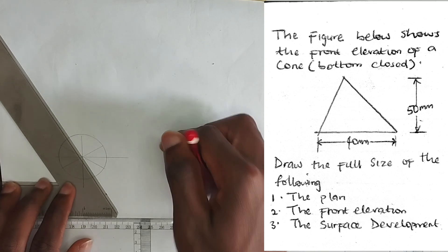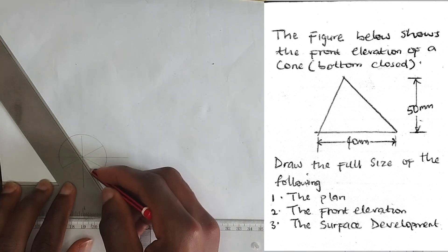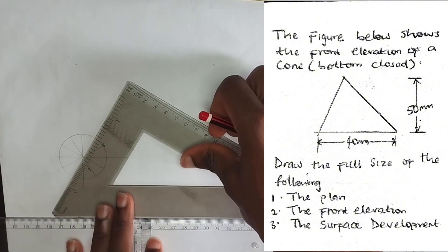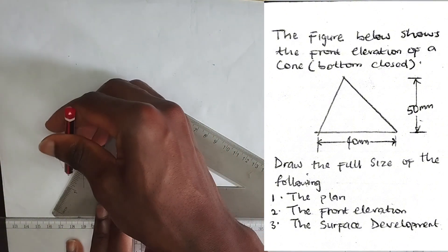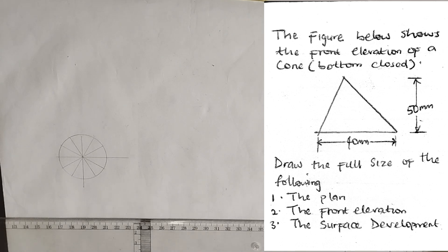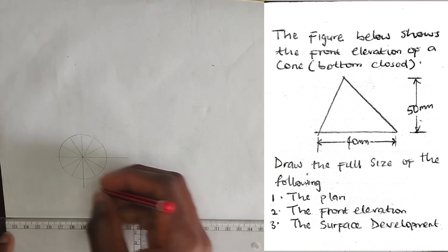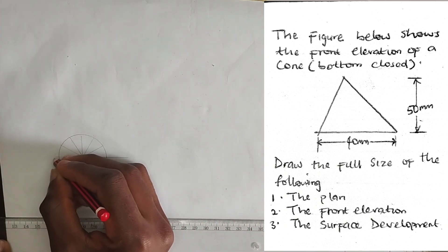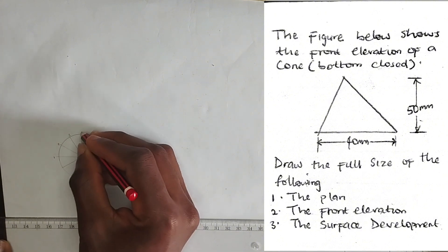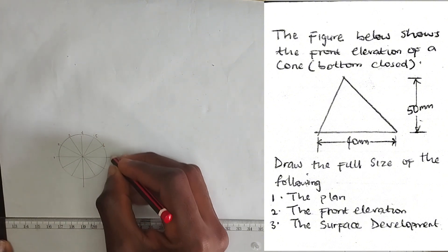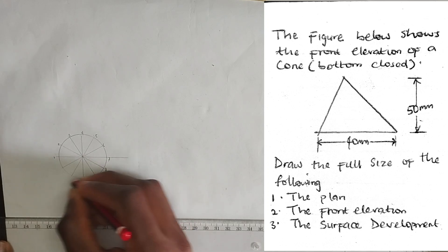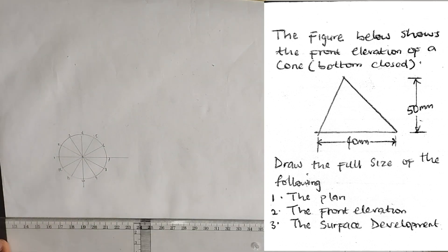Divide the circle in this manner. Now the next thing we have to do is label those points — it's very necessary. Starting from this point: one, two, three, four, five, six, seven, eight, nine, ten, eleven, and this is point twelve.